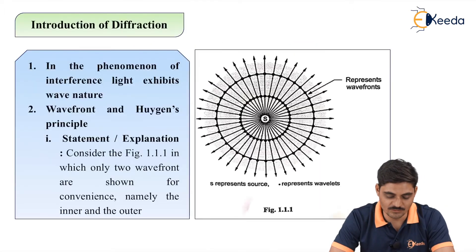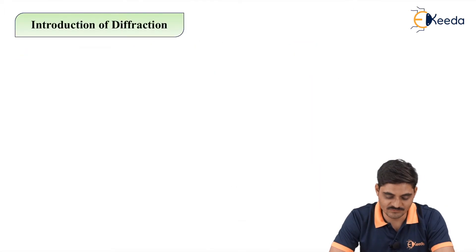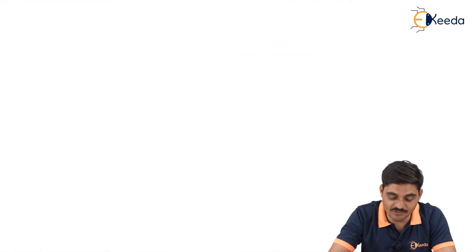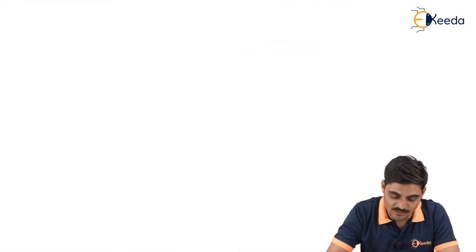Let me give you the exact meaning of this. According to Huygens principle, each point on the wavefront acts as a secondary wavelet.